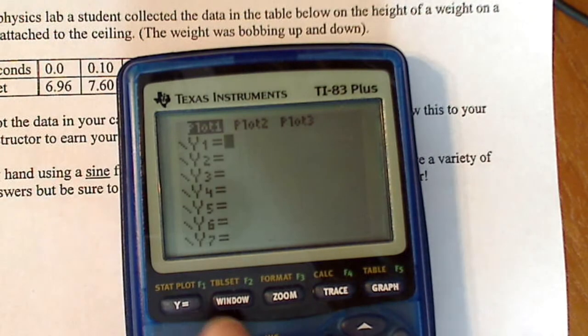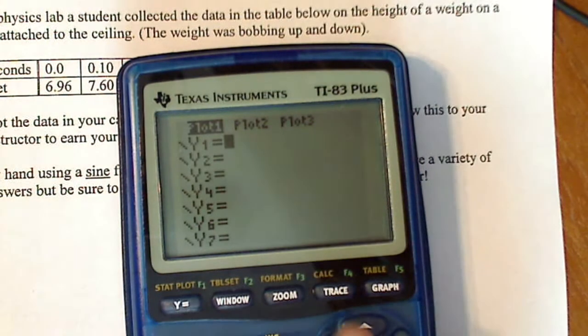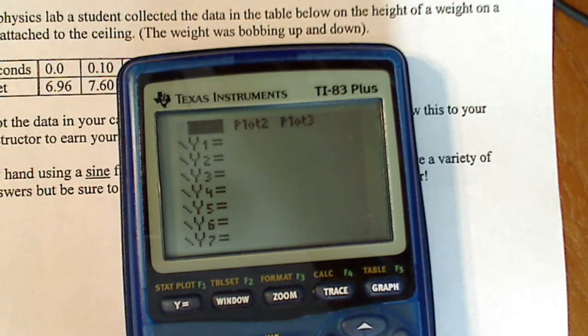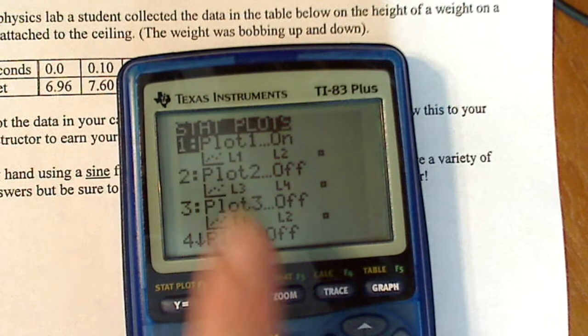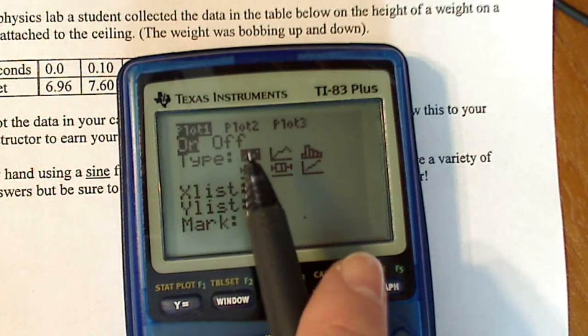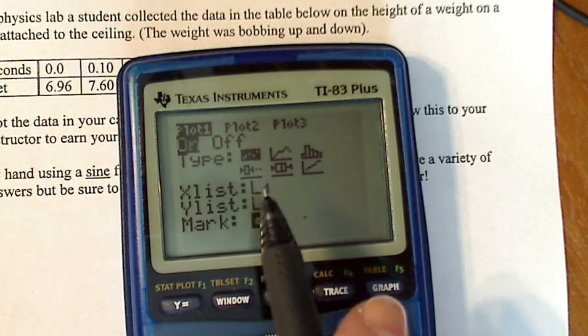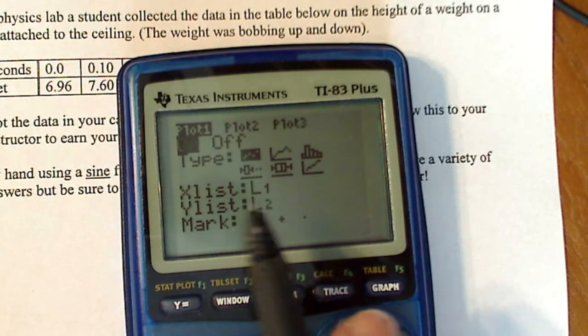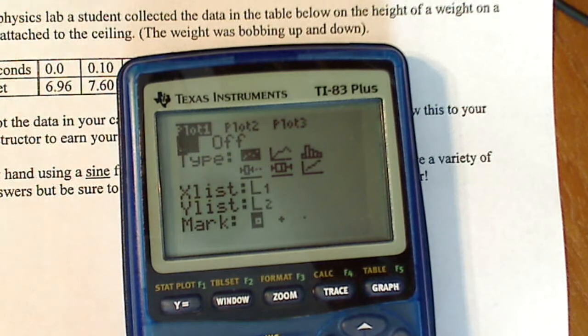Then you go to your y equals and make sure that everything's empty. Make sure your first plot is highlighted. Now, if you're not sure that that is going to give you a scatter plot because you've been messing around with it, you go to the stat plot, second stat plot. Hit plot one. Make sure you turn it on. And this first guy is highlighted for the scatter plot. Make sure your x list is list one, your y list is list two, because that's how you entered it in.